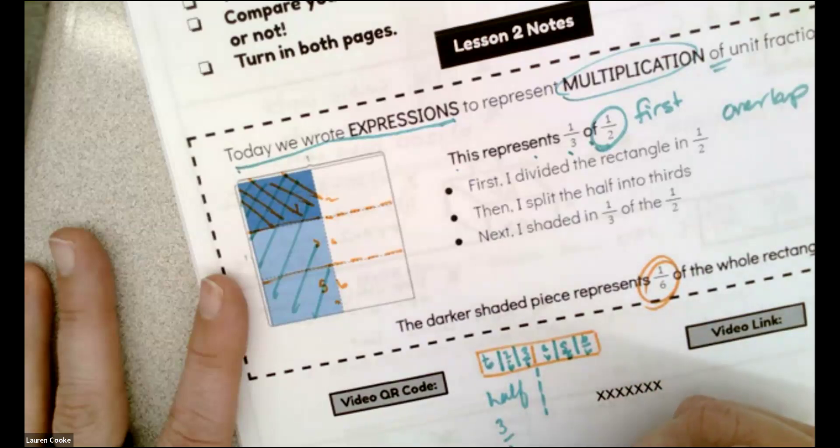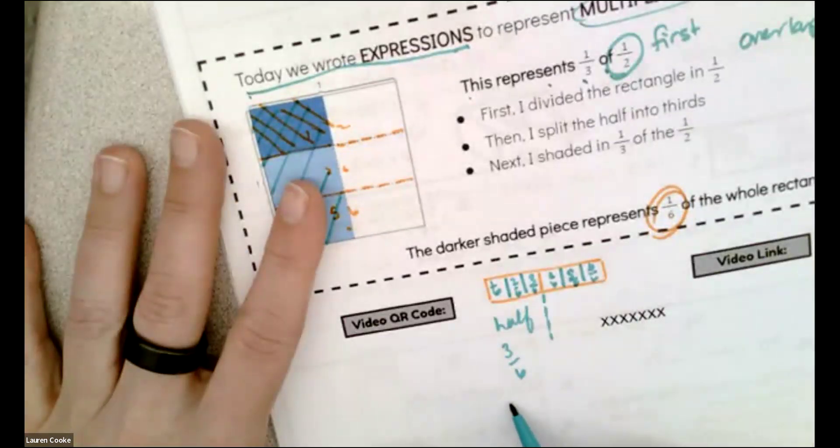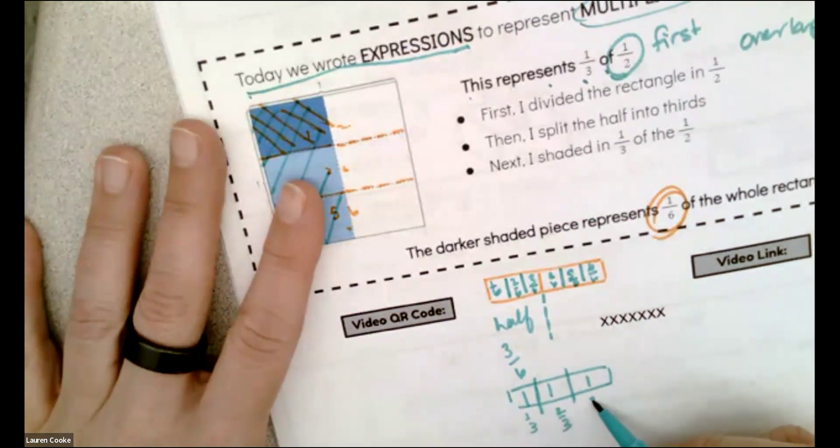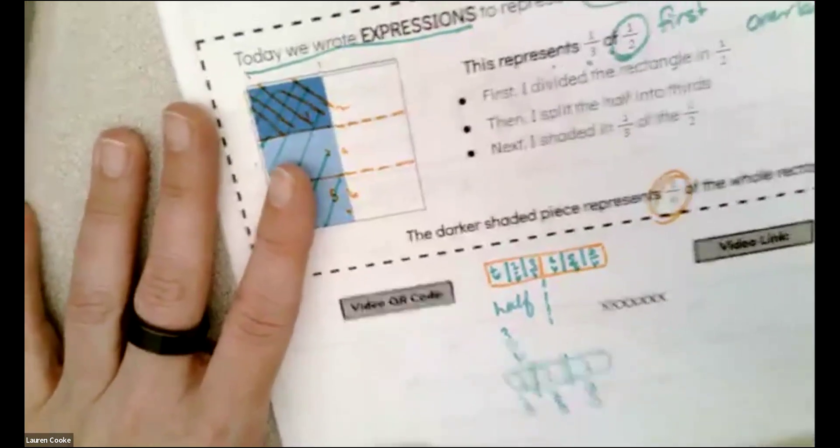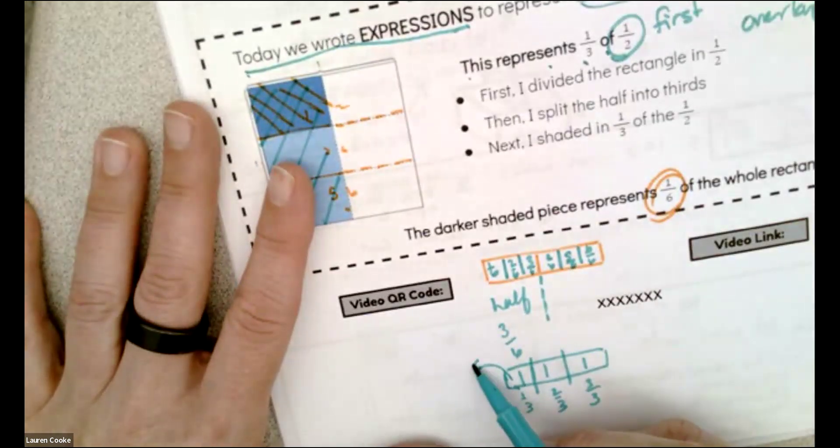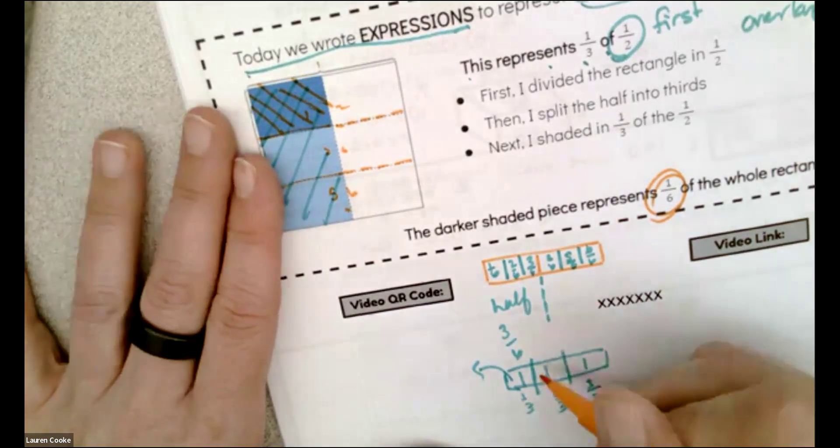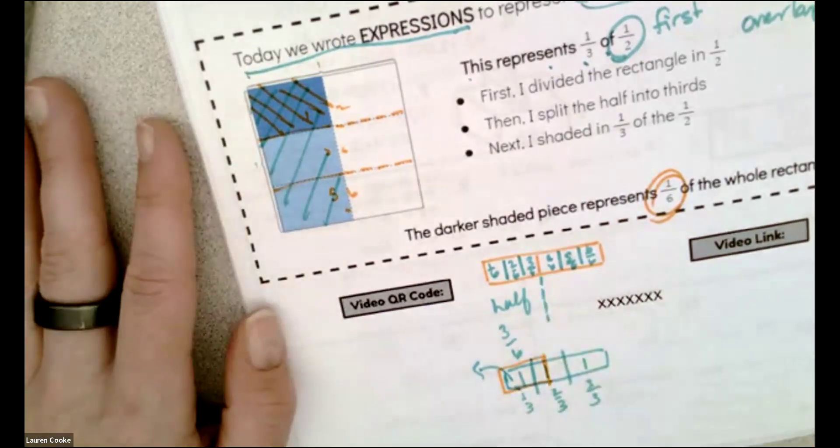Which is three-sixths. And if I split six into thirds, that's one-third, two-thirds, three-thirds. And that's how I end up having one-sixth, one-third of this half, which is right here. I'm splitting the half into three pieces.